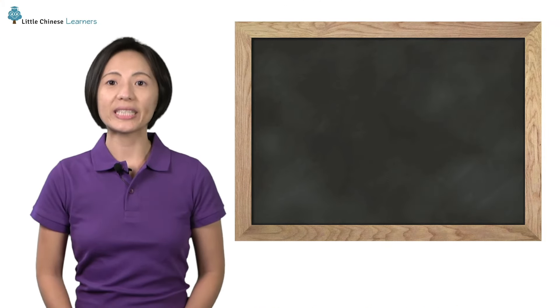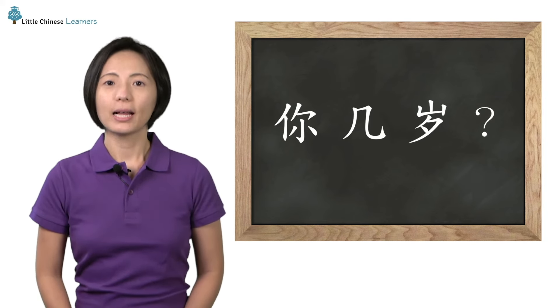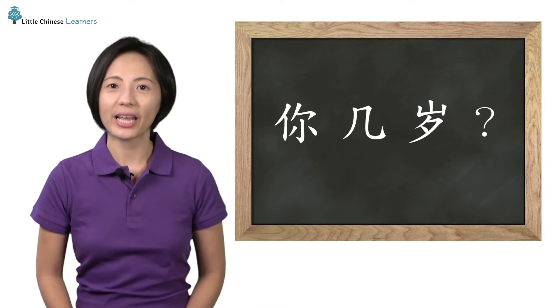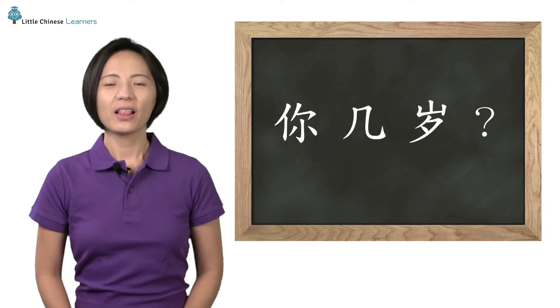To ask for someone's age in Chinese, we say 你几岁? How old are you? 你几岁? Let's break it down.